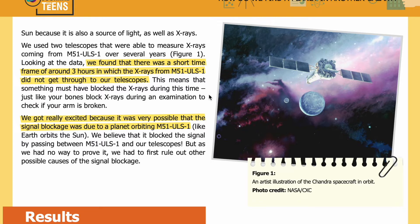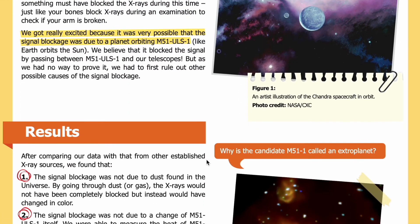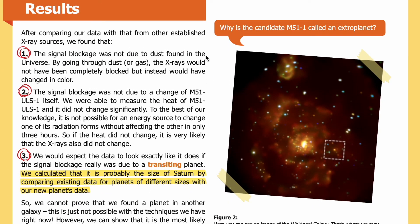Something must have blocked the X-rays during this time — just like your bones block X-rays during an examination to check if your arm is broken. We got really excited because it was very possible that the signal blockage was due to a planet orbiting M51-ULS-1, like Earth orbits the sun. We believe it blocked the signal by passing between M51-ULS-1 and our telescopes. In Figure 1, you can see an artist's illustration of the Chandra spacecraft in orbit, with solar panels spread out like wings and a planet depicted just underneath it.